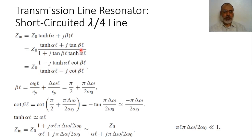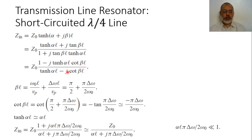Thus, the input impedance is expressed in terms of tanh(αl)·cot(βl) over (tanh(αl) − j·cot(βl)). When l is nearly lambda-over-4, meaning βl is nearly π/2, the value of cot(βl) is nearly zero. This means that at exactly lambda-over-4, the input impedance reduces to Z₀ / tanh(αl).